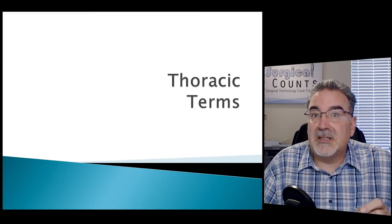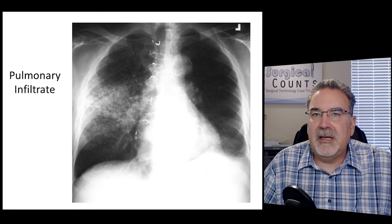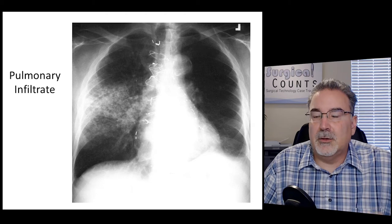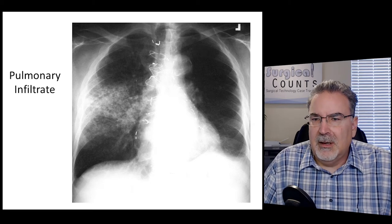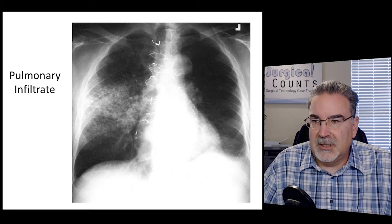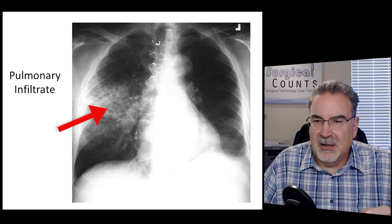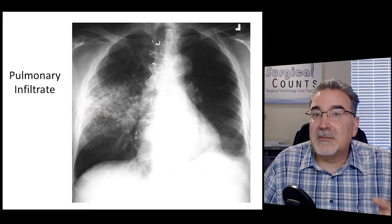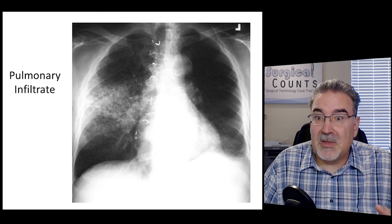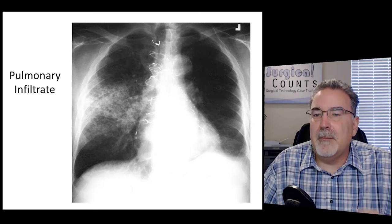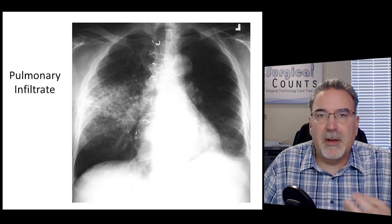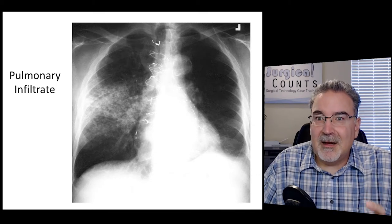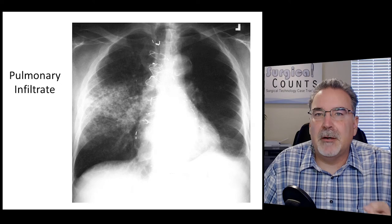Let's start by taking a look at some of the thoracic terms you might hear. Pulmonary infiltrate — pulmonary means lungs, and infiltrate means something's gotten into where it doesn't belong. Take a look at this chest x-ray. We can see the two lungs on each side, and look at this area in the middle of the right lung — it's kind of cloudy, with a splotchiness to it. That's pulmonary infiltrate — something in that lung that doesn't belong there, maybe a pneumonia, infection, or tuberculosis.